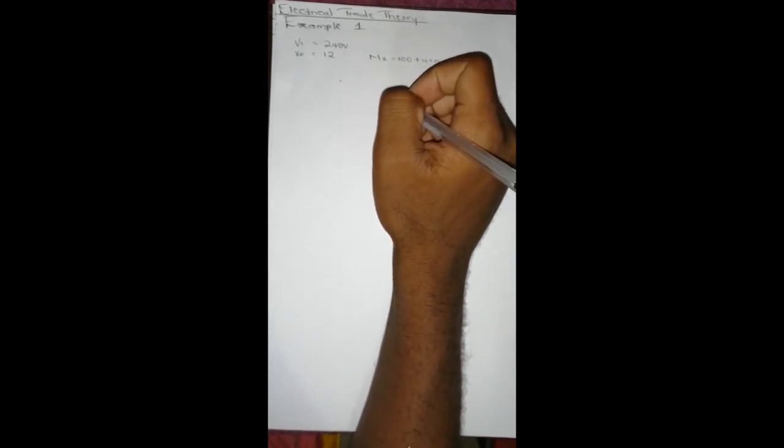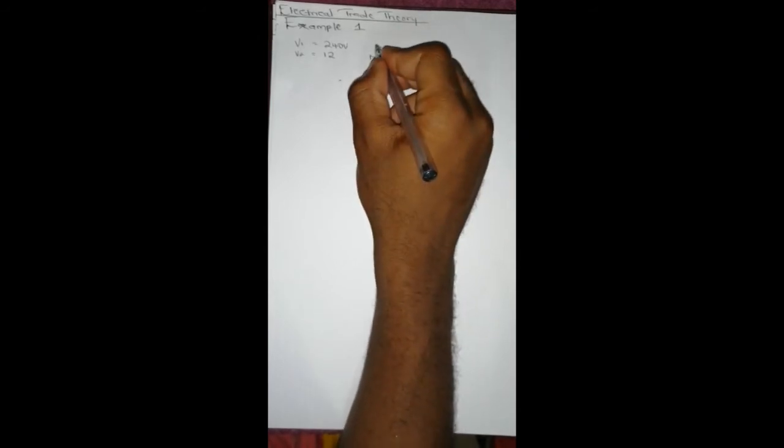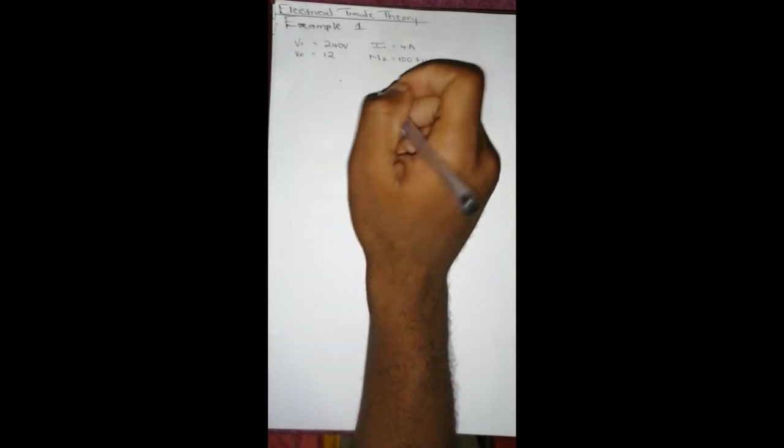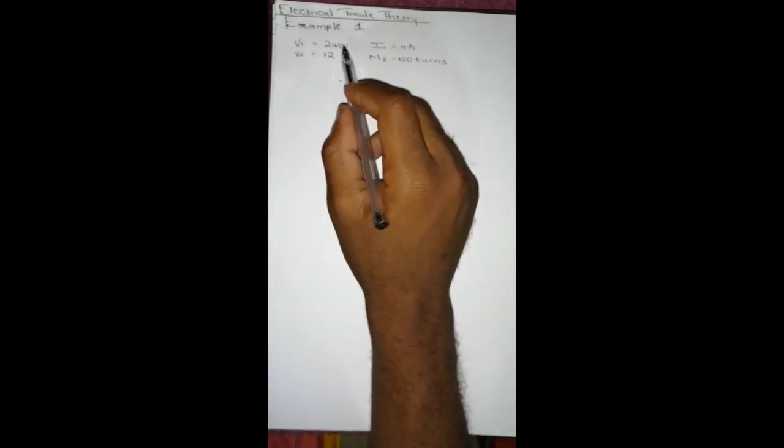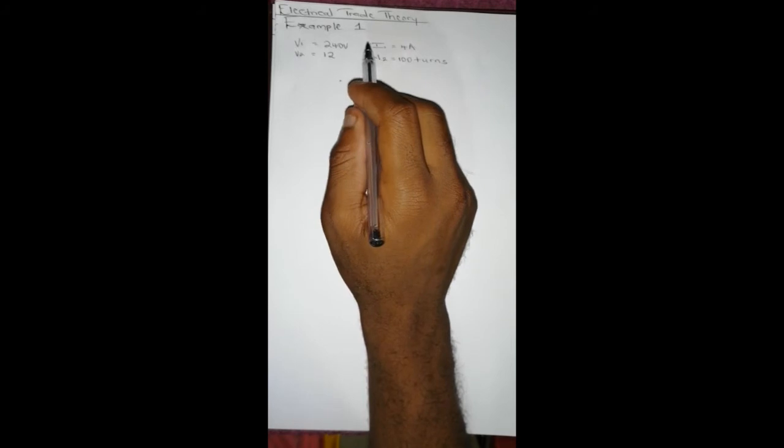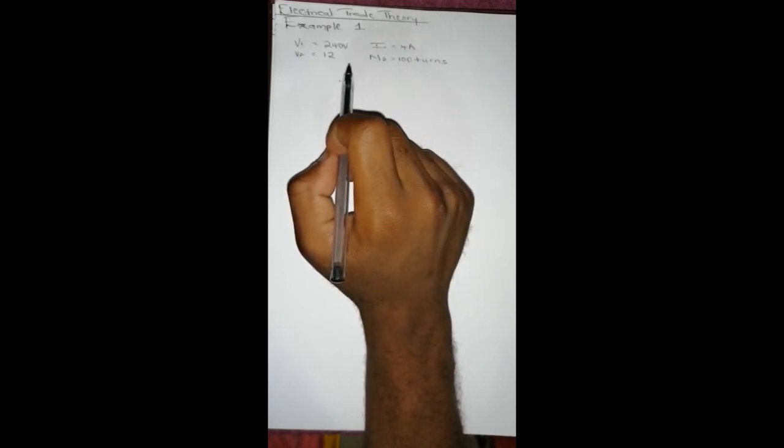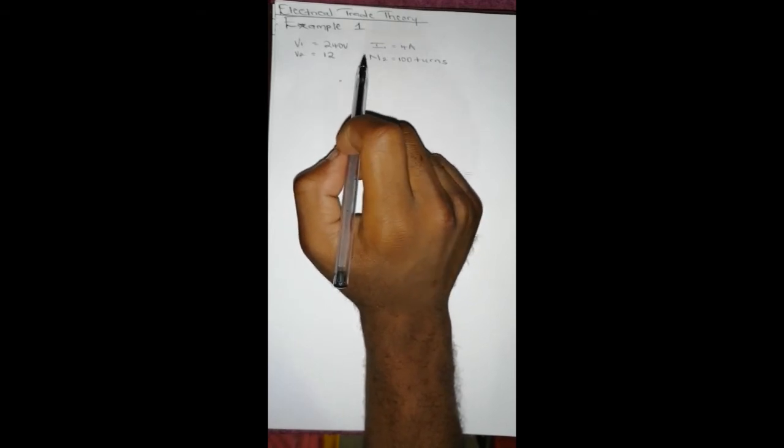And then I1, the supply current, equals 4 mA. So how do we come up with which is which? Here we are told that it's a 240-12 volt transformer, so the first voltage is the primary side, then the second is the secondary side.